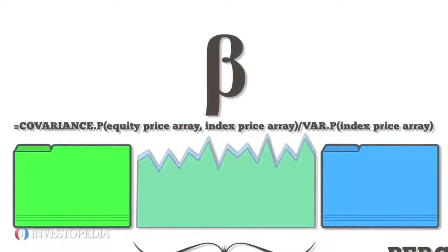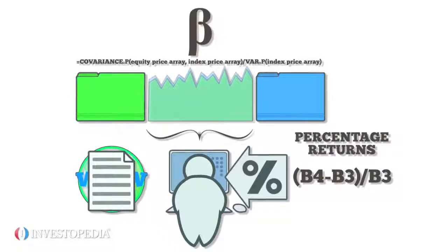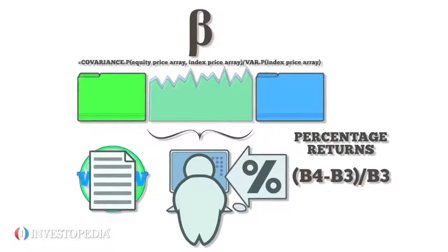Another method is to find the slope of the linear trend line, created by plotting benchmark returns against equity returns. Beta equals the slope of the trend line.